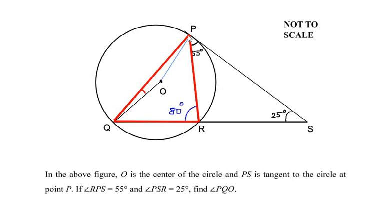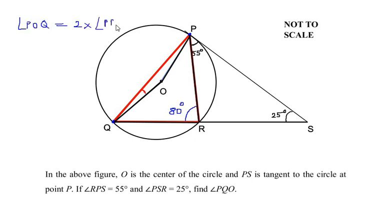Let us consider points P and Q which are on the circle. These two points make an angle at the center O, and the same two points make an angle at the circumference at point R. We already found angle R as 80 degrees. Using the theorem, angle POQ equals two times angle PRQ, which is two times 80, giving us 160 degrees.